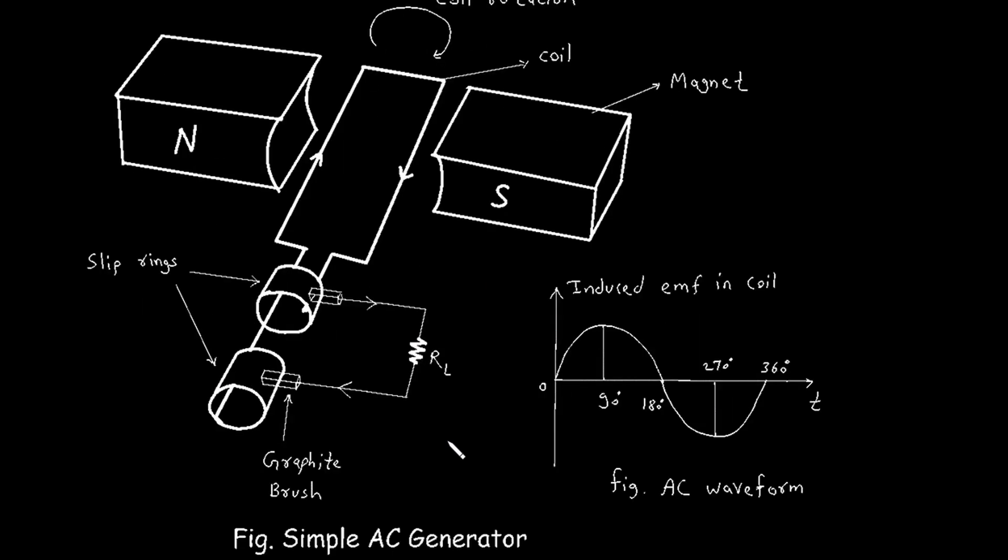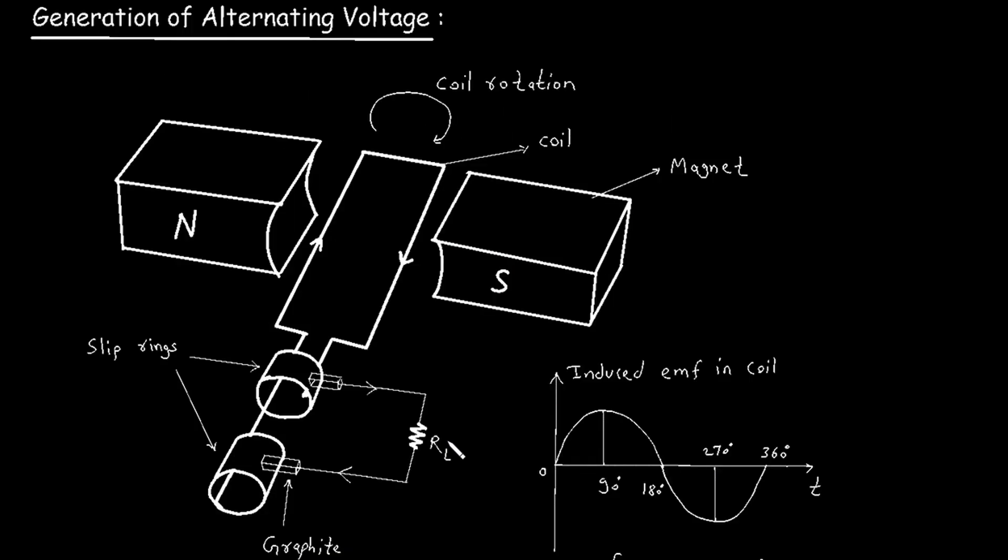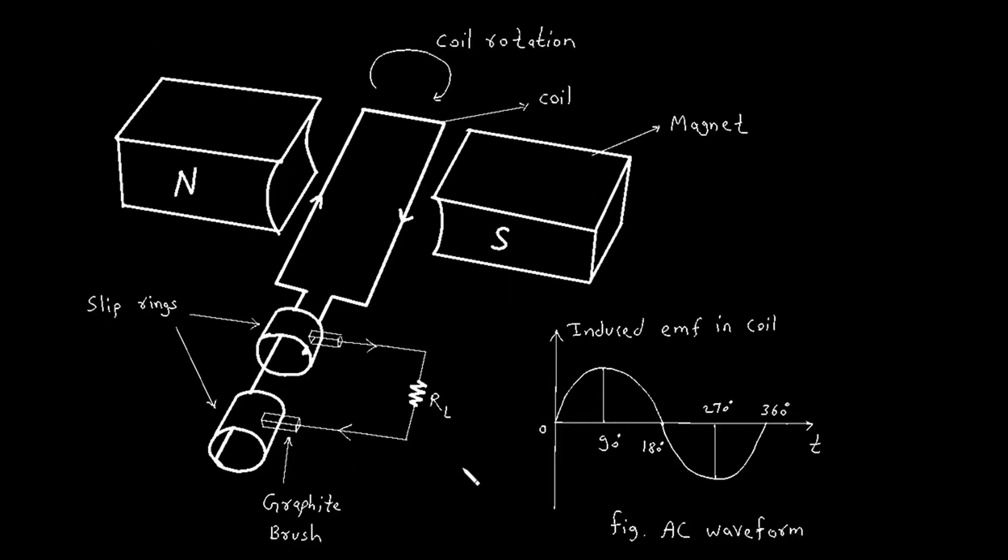In summary, an AC generator works by rotating a coil within a magnetic field, inducing an alternating EMF in the coil. This EMF produces an alternating voltage, which can drive an alternating current through a connected load. The continuous rotation of the coil ensures a steady generation of AC voltage, which is fundamental to the operation of many electrical devices and power systems.